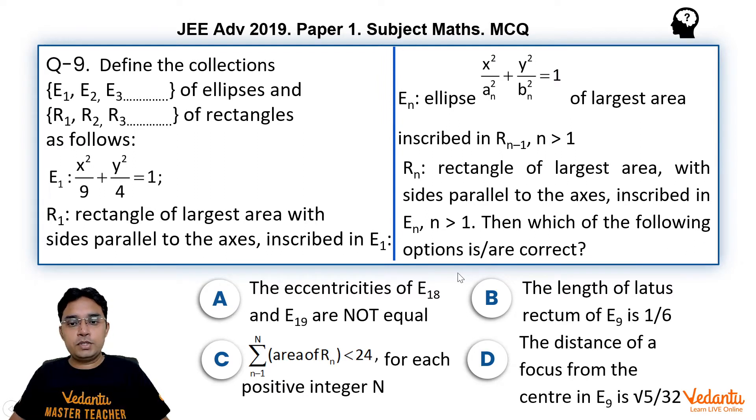Then which of the following options is/are correct? A: The eccentricities of E18 and E19 are NOT equal. B: The length of latus rectum of E9 is 1/6. C: Sum of area(Ri), i=1 to N, for each positive integer N, is less than 24. D: The distance of a focus from the center in E9 is √5/32.